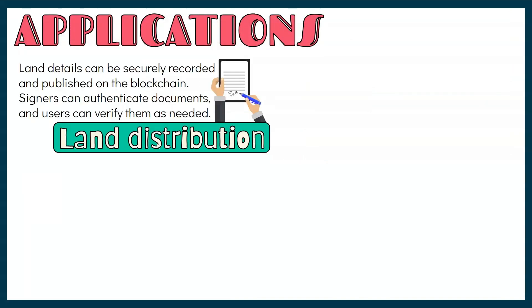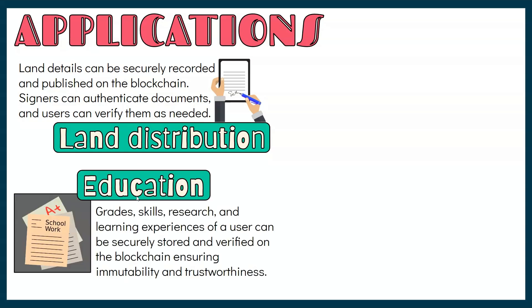Other applications may come from the following areas. Blockchain can improve land registration by reducing intermediaries, minimizing fraud, and speeding up the process. Land details like physical status and ownership rights can be securely recorded and published on the blockchain; signers can authenticate documents, and users can verify them as needed. Blockchain can enhance education by securely storing data such as grades, skills, research, and learning experiences. Each user's unique ID is matched with their educational information in the blockchain, which is verified by global miners.